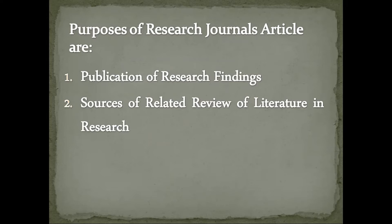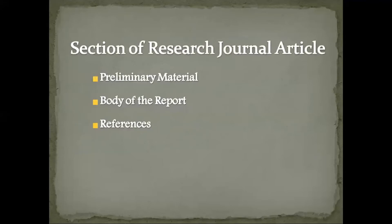A research journal article serves two main purposes. First, it is a report where new and original findings are published. Second, any researcher working in a related field will use this published work as a source of secondary data, and thus it acts as one of the sources from where a review of related literature is obtained.